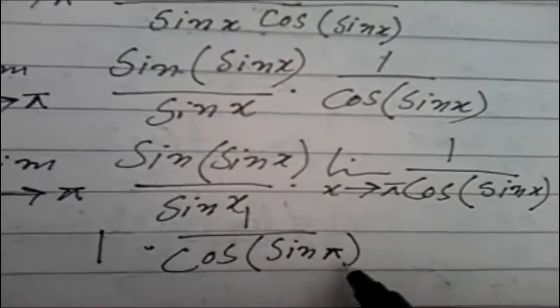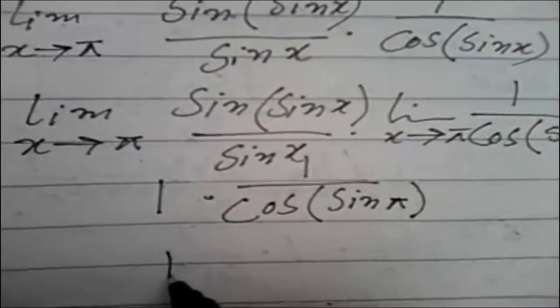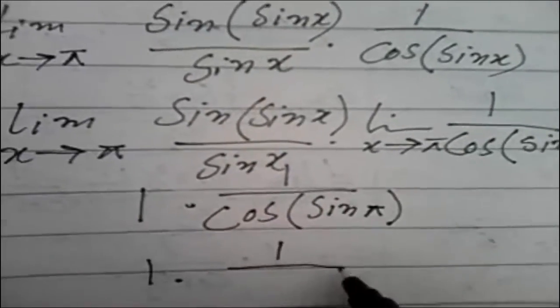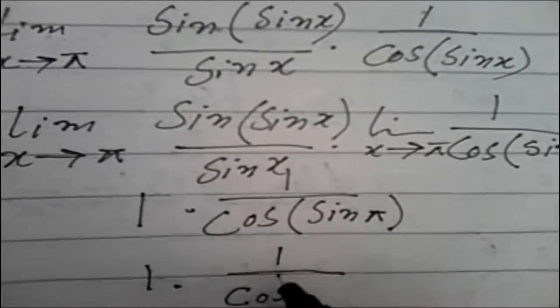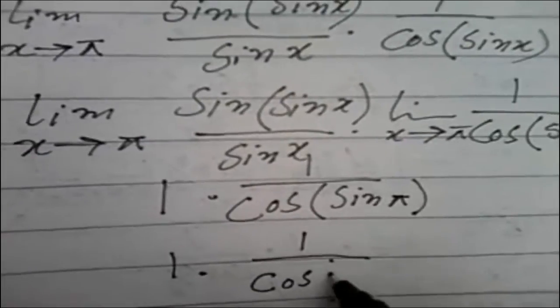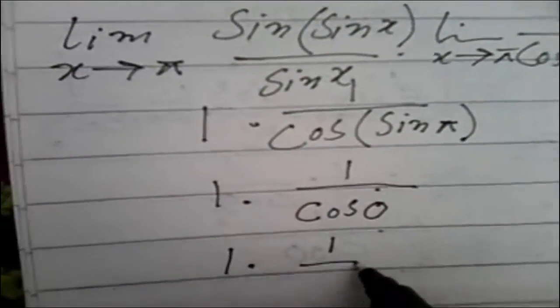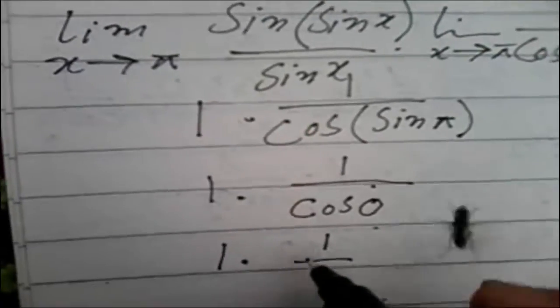It became one multiplied - I'll put values - and sin(x) is π, so one. Sin(π) is equal to zero, as we already discussed. We can write cos(0), and one minus... cos(0) is one, and one multiplied by one over one becomes one. So here is our answer.